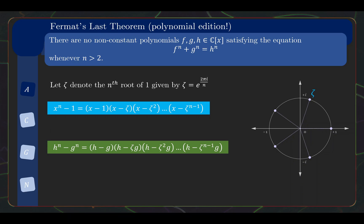Why is this true? Look at the equation in blue and expand the right hand side. The coefficient of x^(n-1) is the negative sum of ζ powers, and by looking at the left hand side, we conclude that this sum is 0. Now look at the equation in green. The coefficient of h^(n-1) times g is again the negative sum of ζ powers, which we just concluded is 0. And similarly, for all the terms in between h^n and g^n, we can conclude that the coefficient is 0 by thinking about the analogous term in the blue equation.